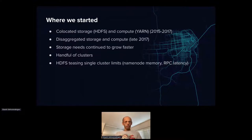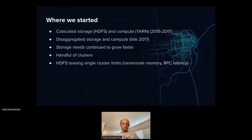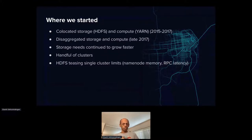Looking back at our history, we started in 2015 with our first HDFS clusters. At that time we co-located HDFS storage and compute on one server type with 24 two-terabyte hard drives, with YARN and compute co-located. Over the years, our storage footprint grew much faster than compute, so we decided to disaggregate them so each could grow independently — this happened around late 2017, on a 10-gig network, with manageable performance impact.